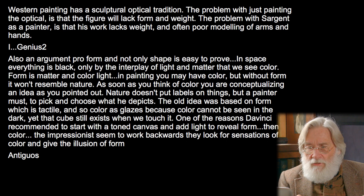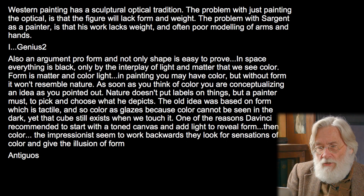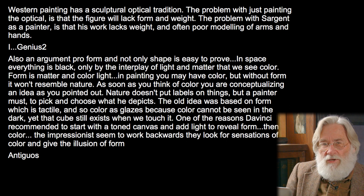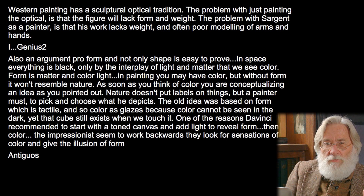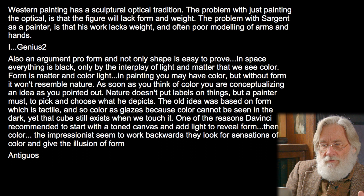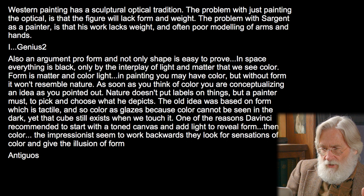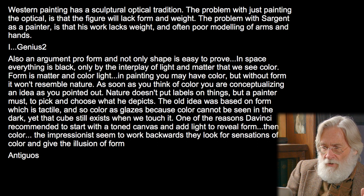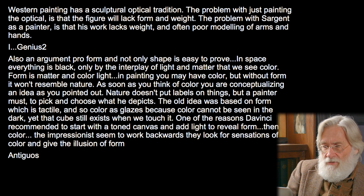The problem with Sargent as a painter is that his work lacks weight and often has poor modeling of arms and hands. I'm putting two questions together today because they both discuss the question of form versus light — an argument for form and not only shape. In space, everything is black; only by the interplay of light and matter do we see color. Form is matter and color is light, and in painting you may have color but without form it won't resemble nature.